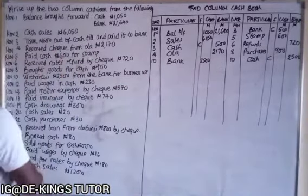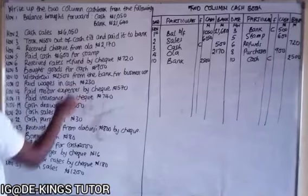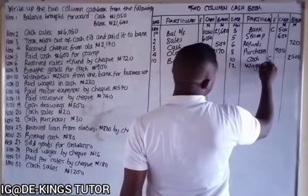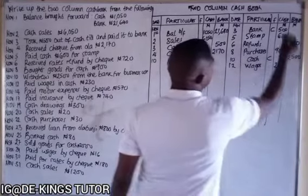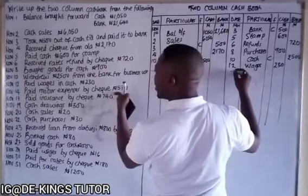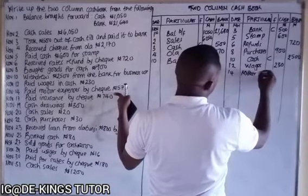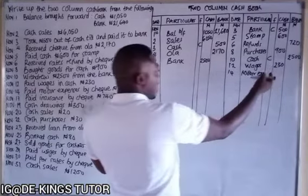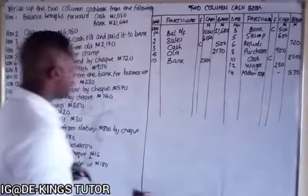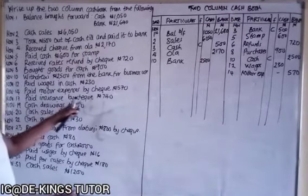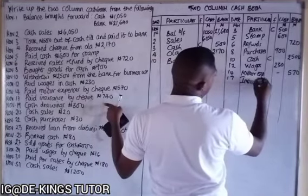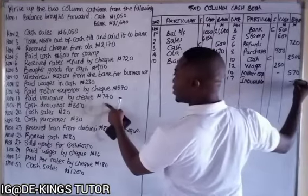November 12 — paid wages in cash 230. This is a cash payment going out, so credited under the cash column: wages 230. November 14/15 — paid motor expenses by check 570. Since it's by check, credited under the bank column: motor expenses 570. November 17 — paid insurance by check 740, credited under the bank column: insurance 740.